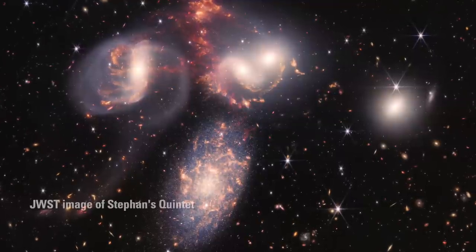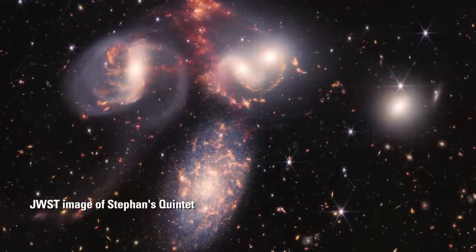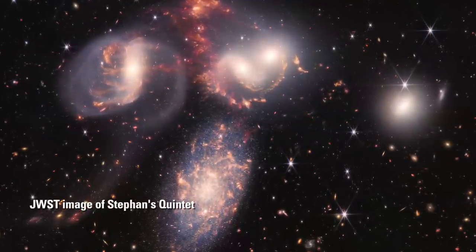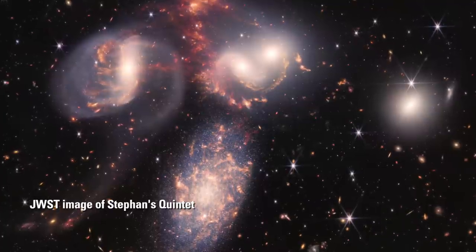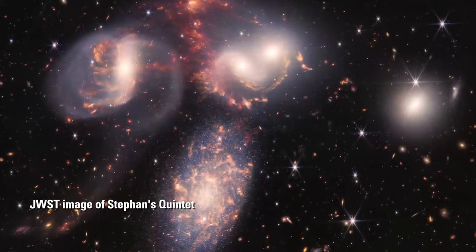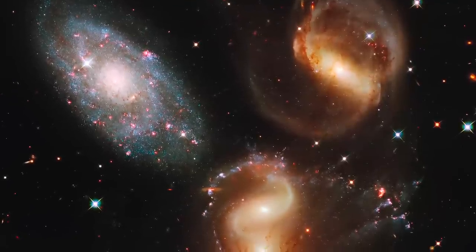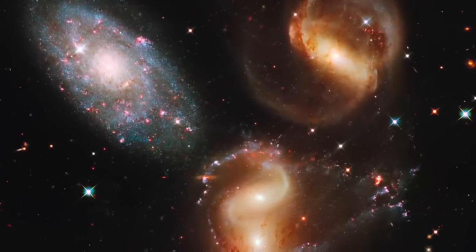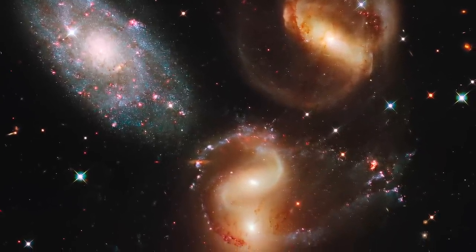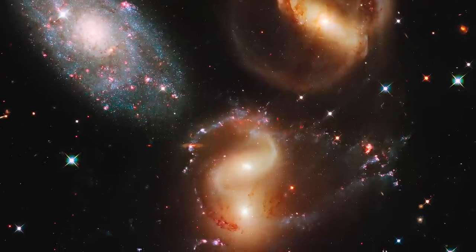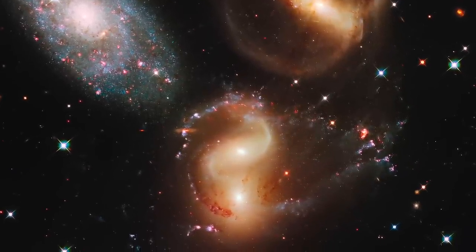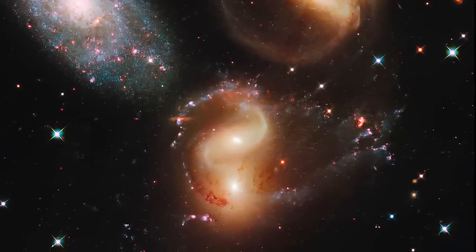Stephan's Quintet is a good illustration of this. The quintet is a close group of five distorted galaxies that on first sight appear to be interacting. Their arms are stretched and twisted, and in some places they appear to be intertwined. The two galaxies closest to each other seem to be mashed together. They're often said to be colliding.